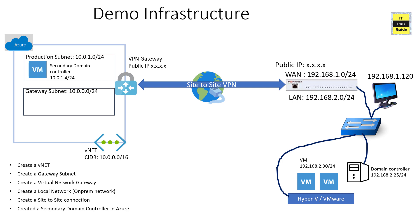Looking at the demo infrastructure: we have a Site-to-Site VPN with on-premises FortiGate firewall and Azure Virtual Network, with a production subnet. We replicated our domain controller with a secondary domain controller in Microsoft Azure, and in the Hyper-V and VMware demonstrations, we shifted virtual machines from on-premises to Azure. For this demo, we're going to migrate the domain controller physical server to Microsoft Azure.